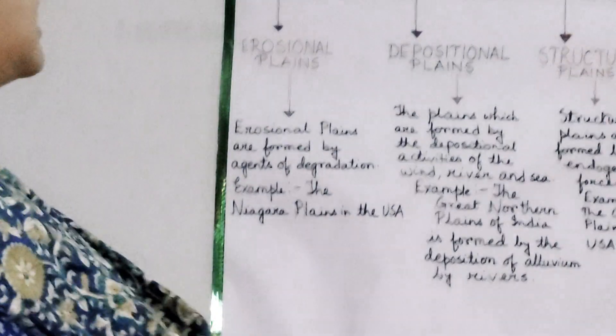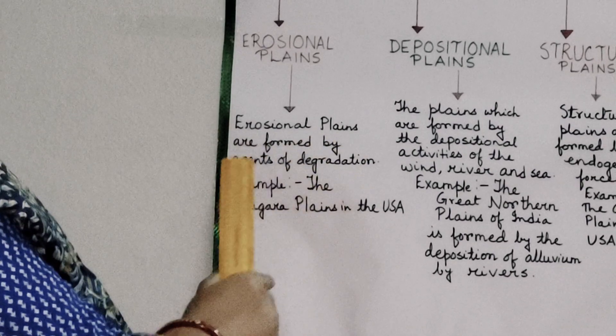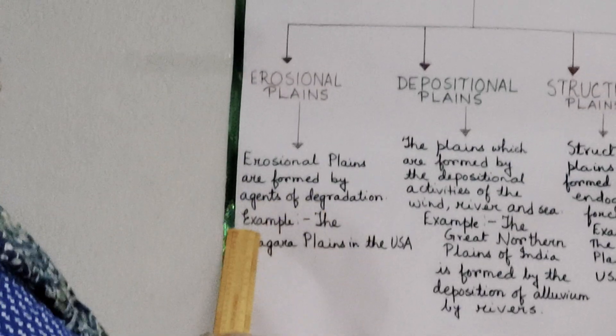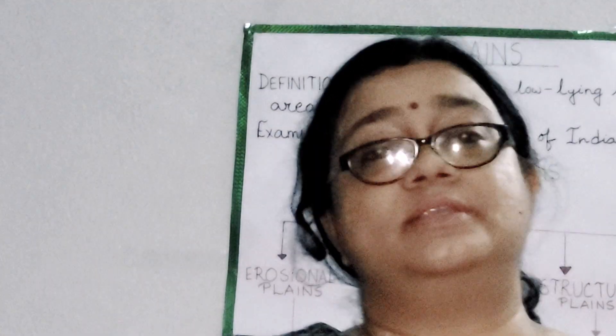The first type is the Erosional Plain. Here in this chart, you can see it's written that erosional plains are formed by agents of degradation — for example, the Niagara Plains in the USA. The erosional agents like wind, running water, and glaciers carve the earth's surface, smoothen its irregularities, and convert them into low undulating plains called Peneplains.